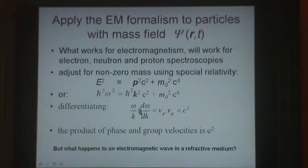Differentiating, we find omega over k times d omega by dk equals c squared. We've met some of these terms before. Omega over k is the phase velocity, and d omega by dk is the velocity of that envelope function. It's the group velocity. So the product of the phase and group velocities equals c squared.